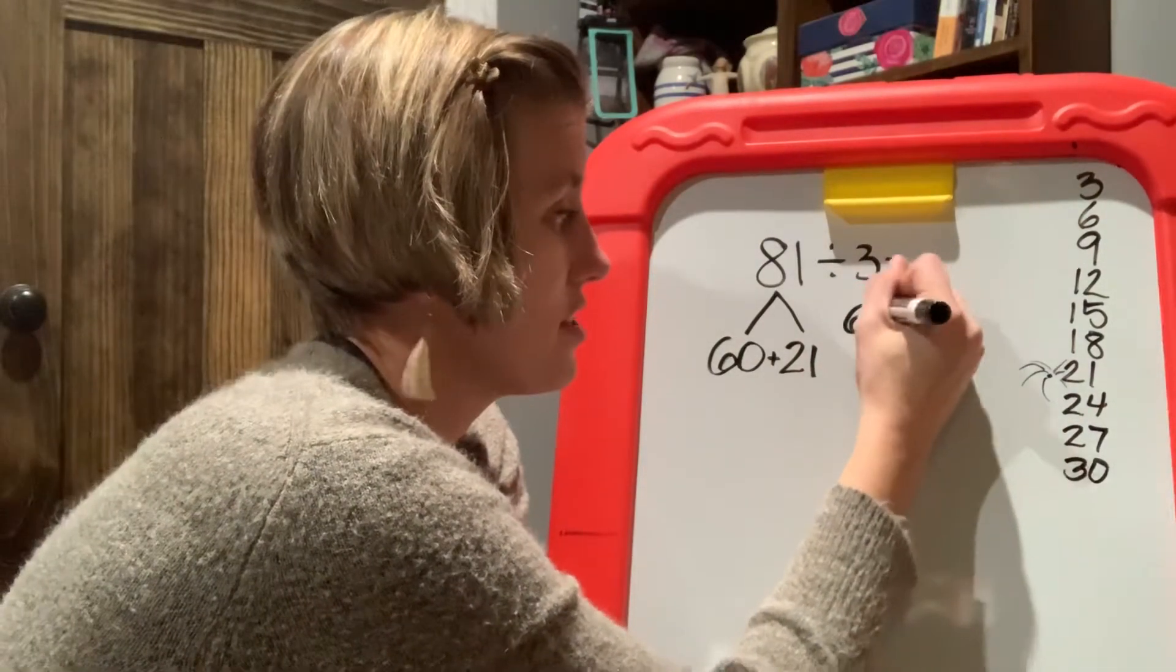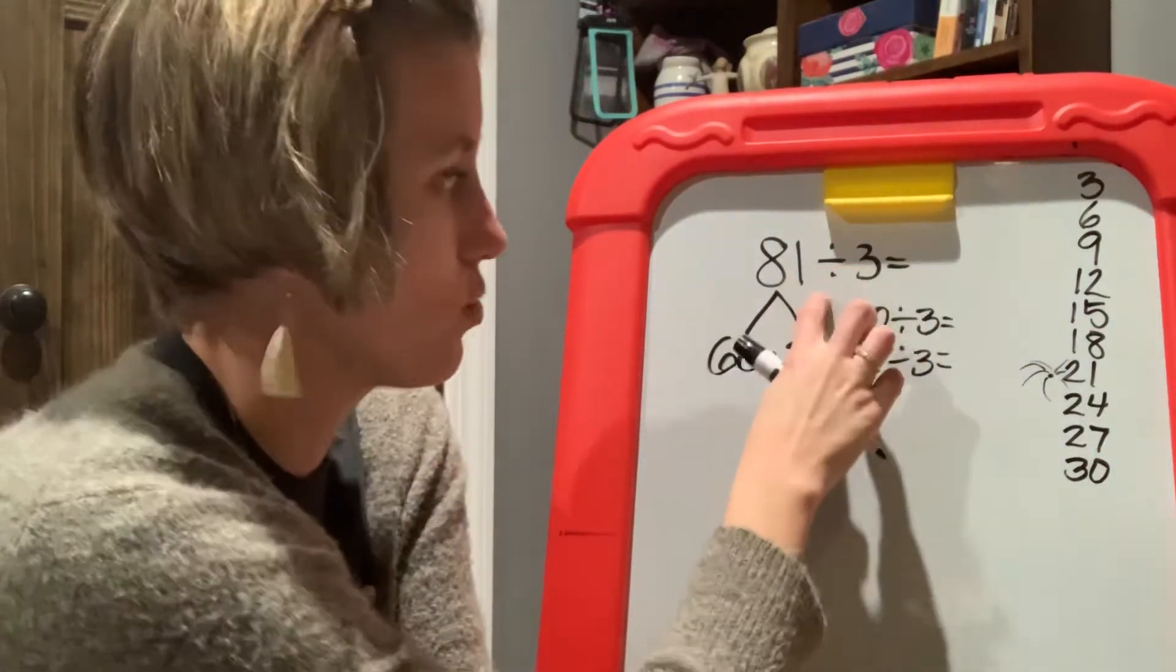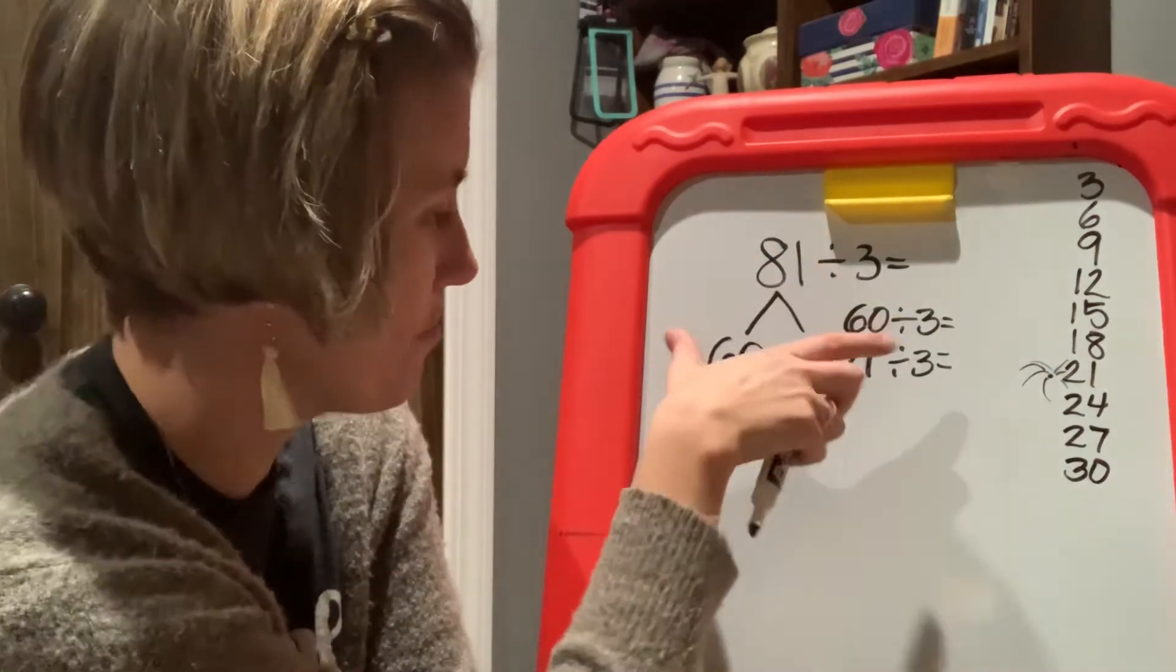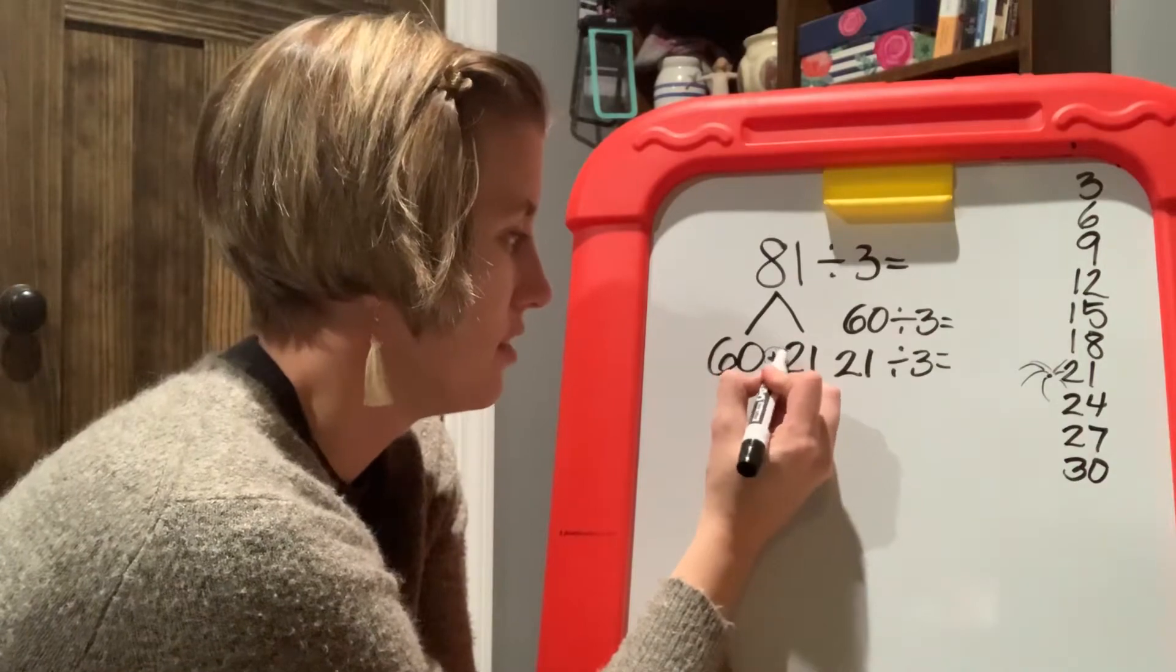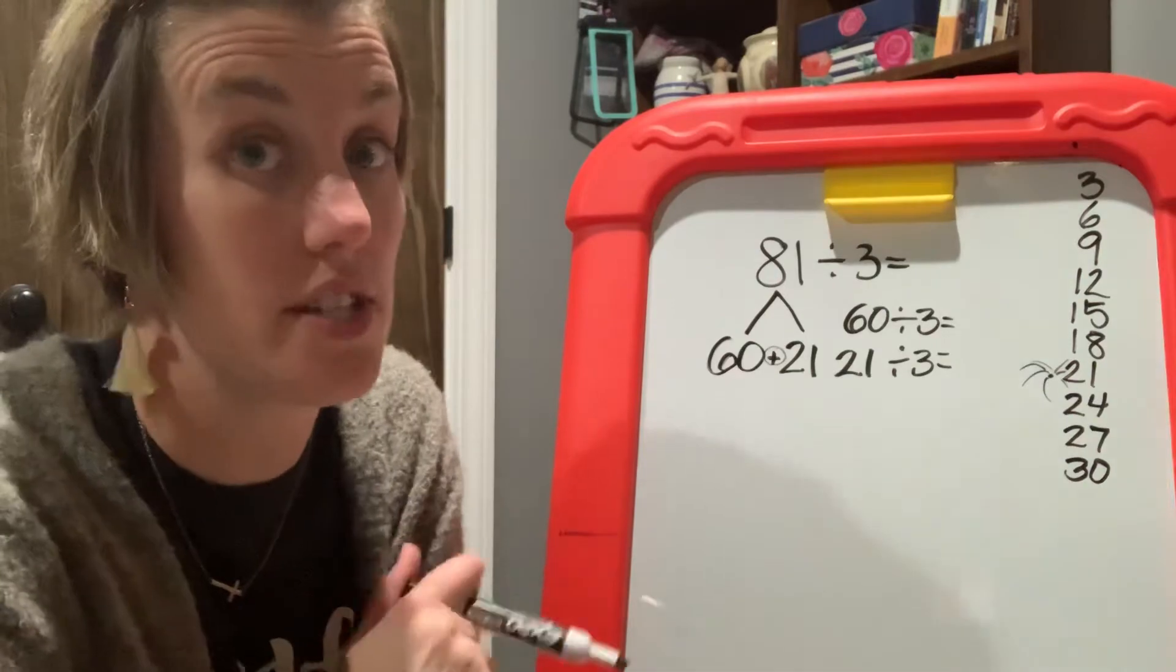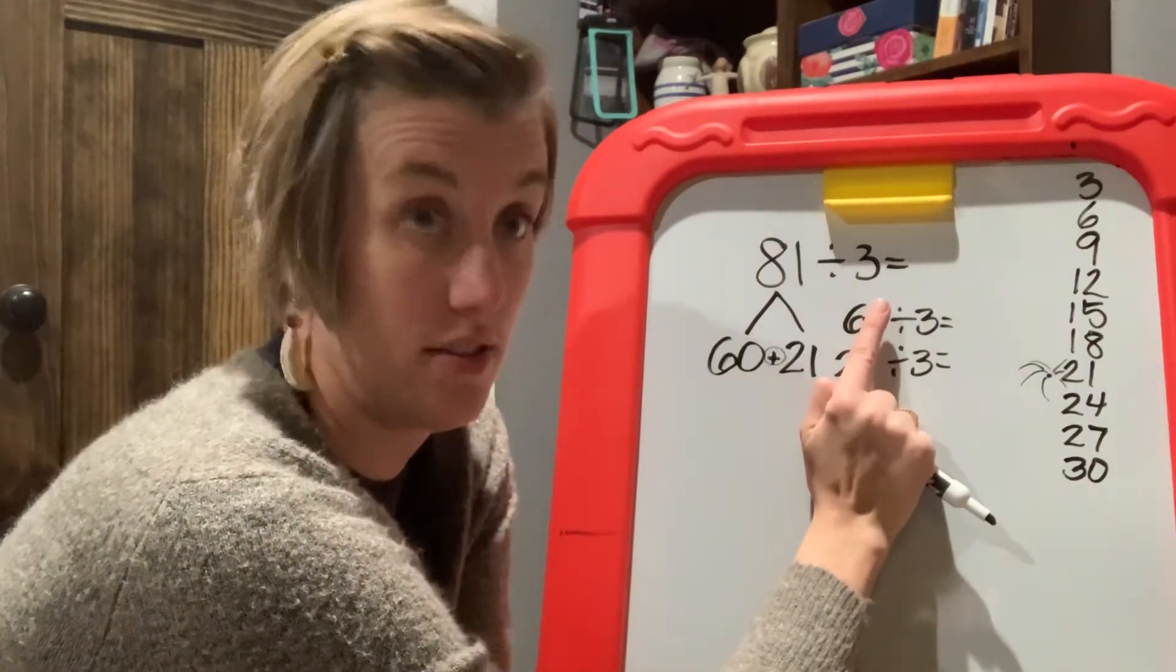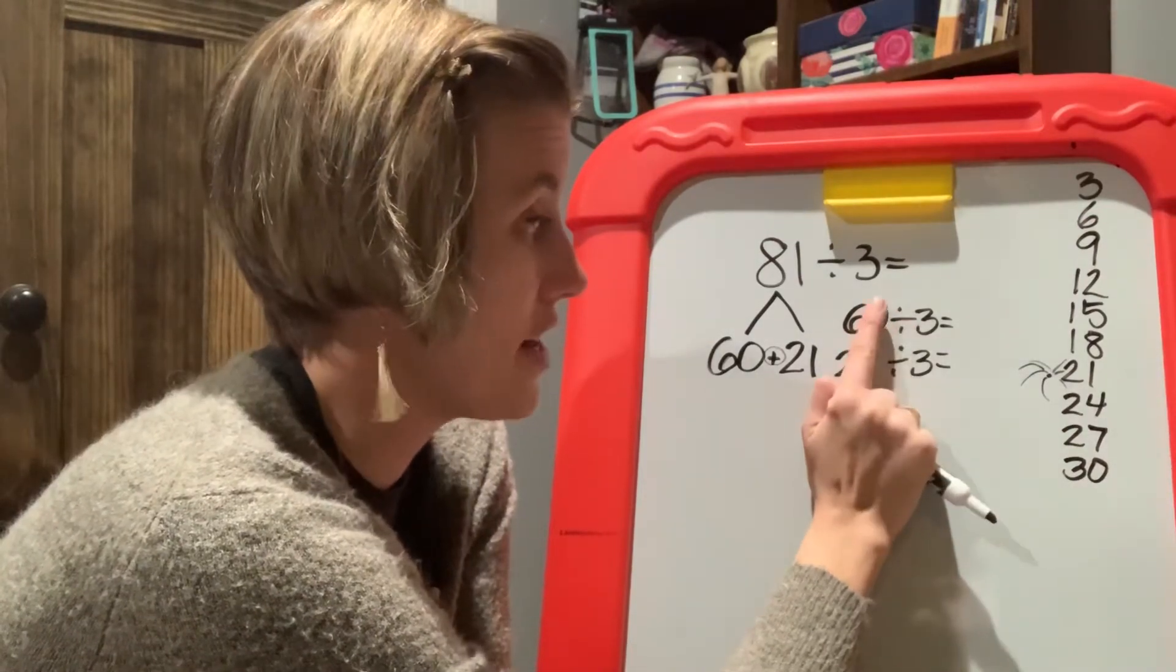So we have 60 divided by three and we have 21 divided by three. We've turned this one division problem into two easier division problems. So we have 60 and we have 21. We've broken these up. We've broken these down. Keep your eye on this guy. He's going to come into play that addition sign. He's going to be an important member of the team in a little bit. So we have 60 and we have divided by three. If I cover up that zero, you can do that.